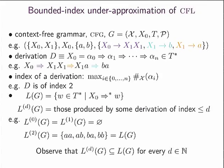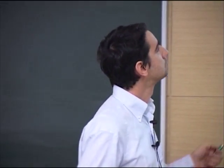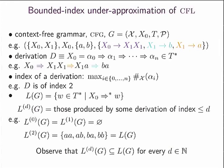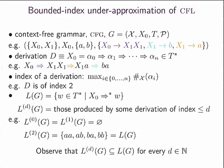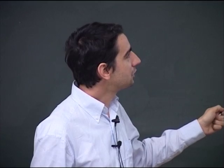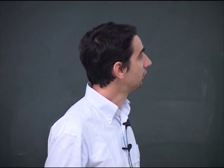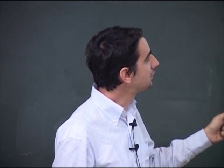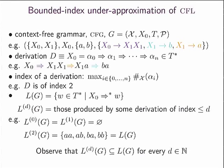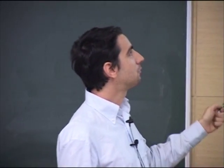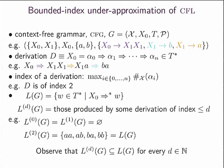Let me define what are those bounded-index under-approximations of context-free languages. A quick reminder: a grammar has a set of variables, an initial symbol, an alphabet — here I use T because my alphabet is the transitions of the Petri net — and a set of productions. A derivation is a sequence of words over variables and terminals such that from one word to the other you apply some production. The index of a derivation: at each step you count how many variables you have. Here I have one variable, two variables, one, and zero. The index is the maximum number of variables seen along the derivation — so for this derivation the index is two.